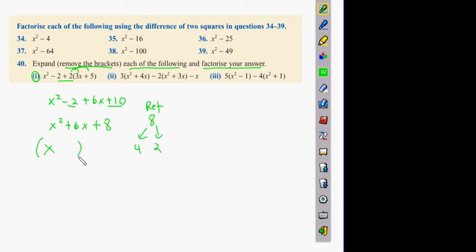Then you have x here, x here, and you have x plus 4, x plus 2. x plus 4, x plus 2. Okay? That's your first one done.